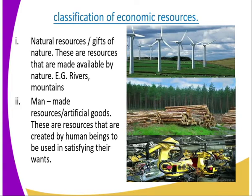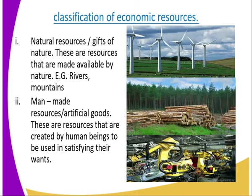Classification of economic resources. After looking at their characteristics, now we can look at how they are classified. We have natural resources — gifts of nature — like forests, trees, rivers, and mountains, which have been provided by nature. Then we have man-made, or artificial, resources: things created by human beings, such as cars, motor vehicles, turbines, and electricity generation.